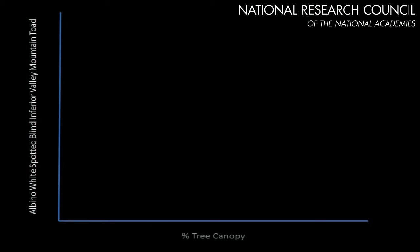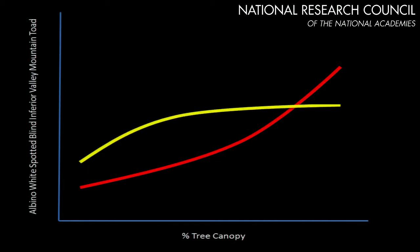It's important to improve on the mapping because from a research side, we want to look at correlations or relationships or causation between tree canopy and other things. Depending on which data sets you have, maybe the curve looks like this or maybe it looks like this. So getting accurate estimates of tree canopy becomes very important.